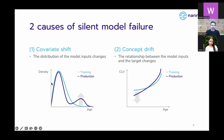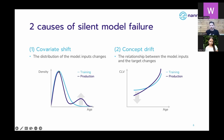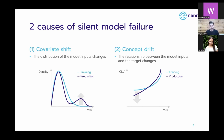If you look at a quick distribution here of which type of people the model was trained on, we can take the example of customer lifetime value estimation, where we try to predict how much value a customer is going to bring to a company. We can train this model and see that there are mostly young people seen in the past. But when we deploy the model in production, older people also become present, and the model has to predict on a new type of population it wasn't necessarily optimized for during training, and hence is prone to making mistakes.